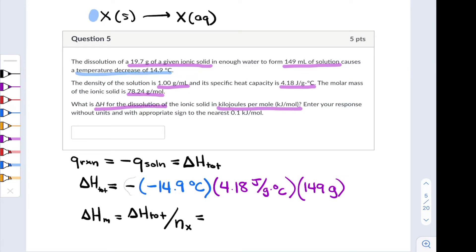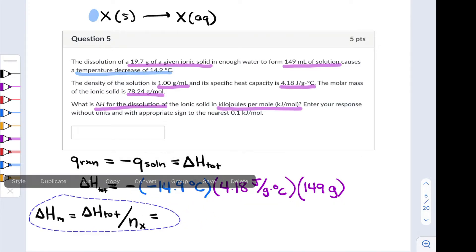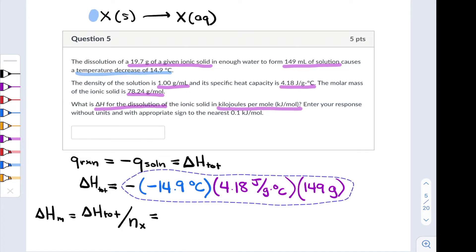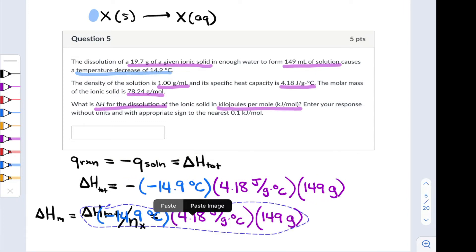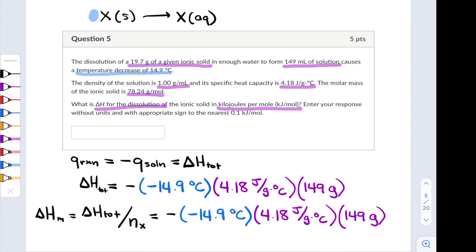To find that, I'm going to take my calculation from the previous line, just to avoid intermediate numbers, and pop it straight down there. And then to find the moles of X, I'm given the mass of X, that's 19.7 grams. And I also know the molar mass of X, the mass of a mole. One mole, according to the information in the problem, weighs 78.24 grams. So that's going to give me moles in the denominator of this calculation.